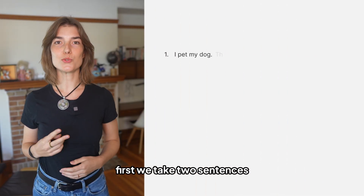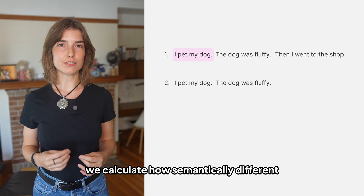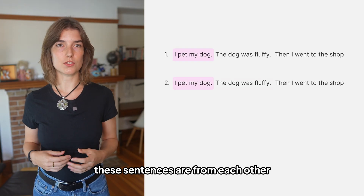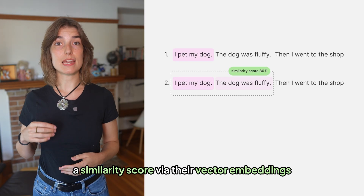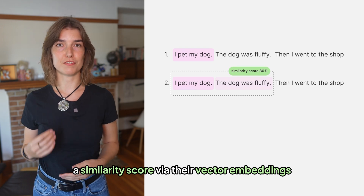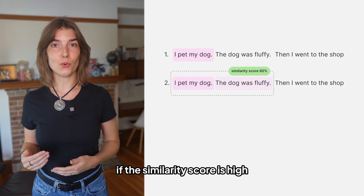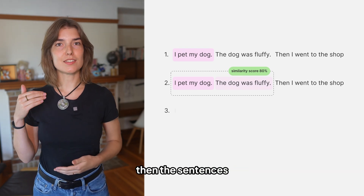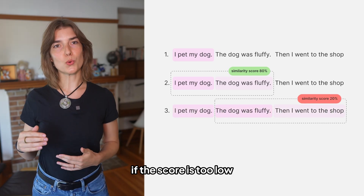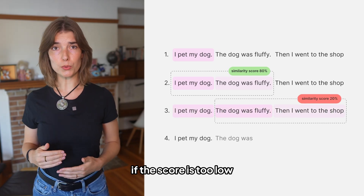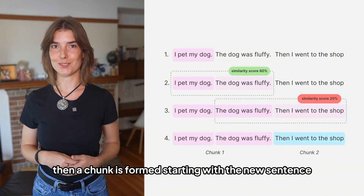Here's how it works. First, we take two sentences. Then, we calculate how semantically different these sentences are from each other by measuring a similarity score via their vector embeddings. If the similarity score is high, then the sentences are combined together to make a chunk. If the score is too low, then a chunk is formed starting with the new sentence.